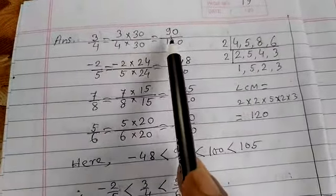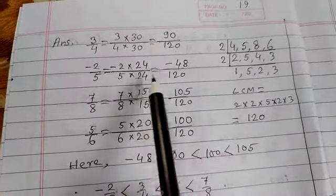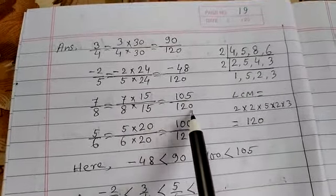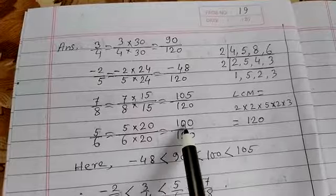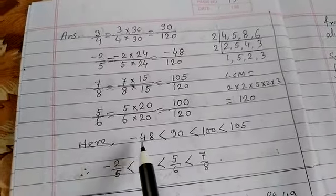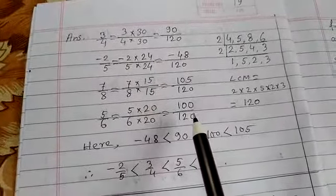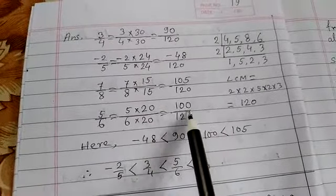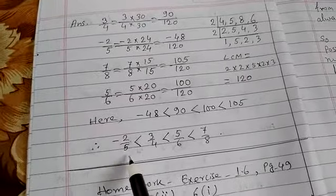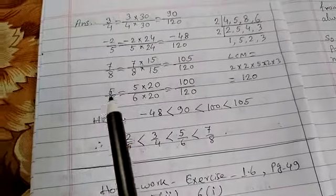We get 90/120 minus 48/120, 105/120, 100/120. Here minus 48 less than 90, 90 less than 100, 100 less than 105. Therefore, -2/5 < 3/4 < 5/6 < 7/8.